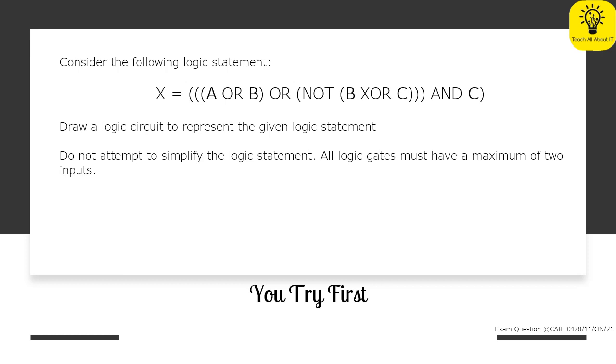So in today's question we're going to be looking at Boolean logic. Now you can see here we have a question that says consider the following logic statement. Now we've got a logic statement underneath and you'll see that the inputs are bold. So we can see here we've got A, we've got B appearing twice, and we've got C appearing twice as well.